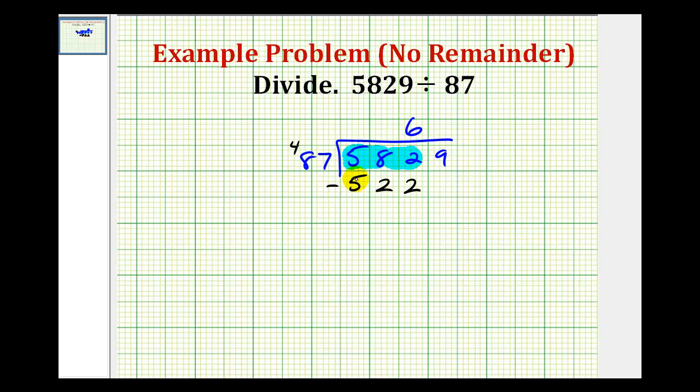Now we subtract. As long as this difference is less than 87, we know the 6 is correct. 2 minus 2 is 0, 8 minus 2 is 6, giving us 60. Since 60 is less than 87, we know this 6 is correct.